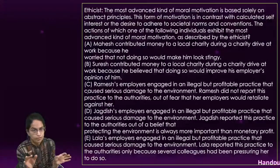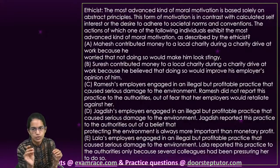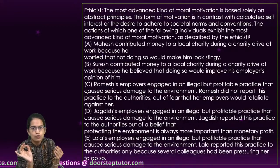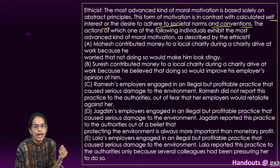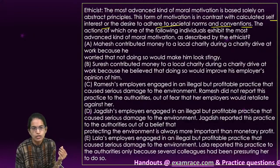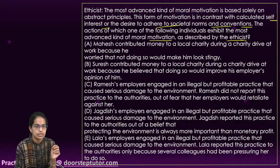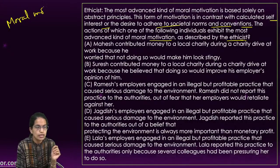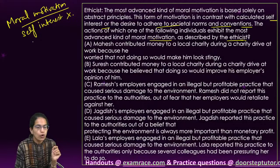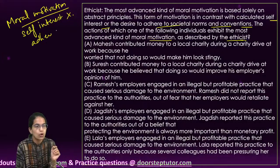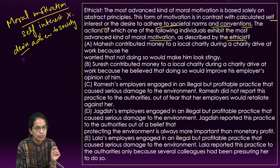The last question for today is a very important one from GS Paper 4 on ethics. It says: the most advanced kind of moral motivation is based solely on abstract principles. This form of motivation is in contrast with calculated self-interest or the desire to adhere to societal norms or convictions. The question asks which individual exhibits the most advanced form of moral motivation as described. So moral motivation must not be focused on self-interest and must not adhere to societal norms or the desire for gaining a name in society.